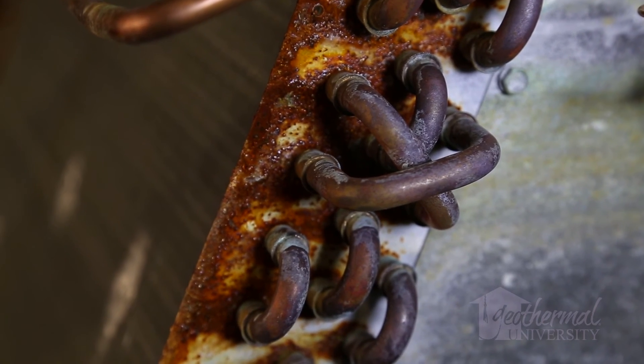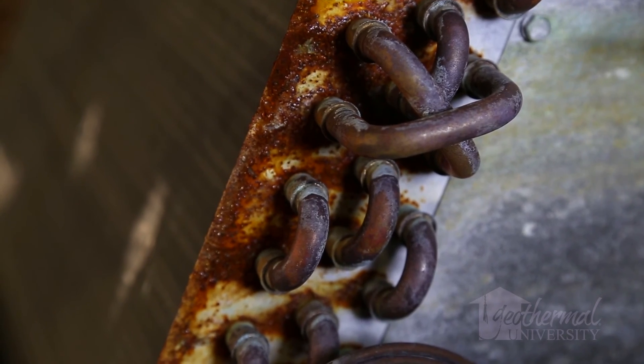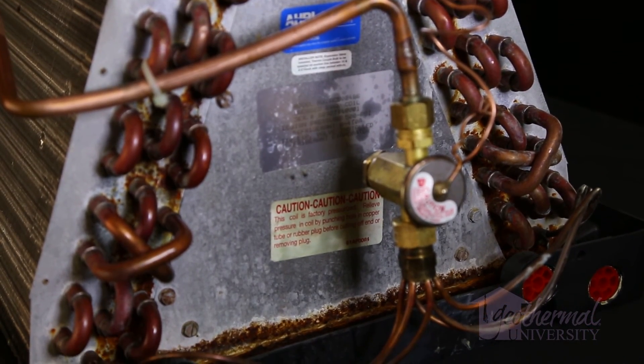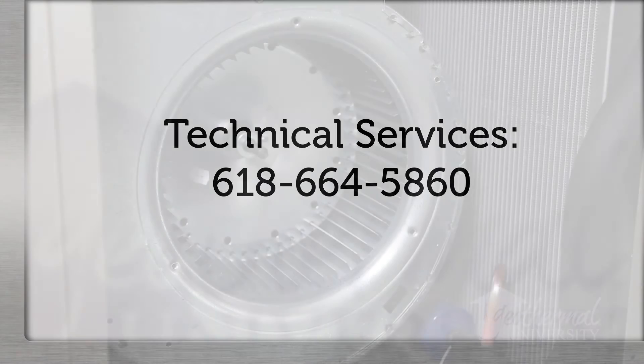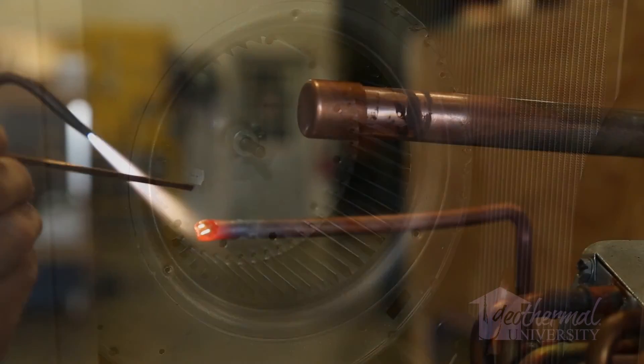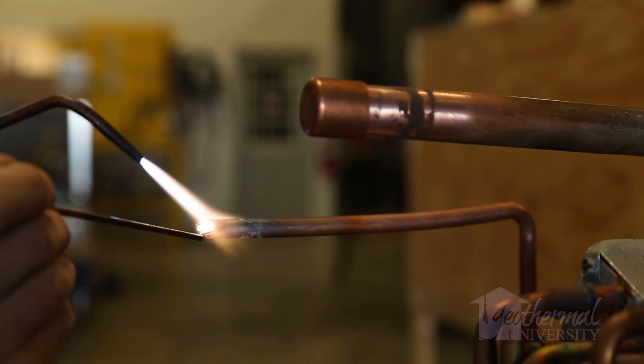Some of the corrosion type leaks discussed in this video are very difficult to repair. Before repairing a coil that has failed because of corrosion, we recommend calling tech support for more information. Many coils such as microchannel can be repaired. Remember when brazing on a refrigerant system to use a nitrogen flow of 2 to 3 psi to prevent internal scaling.